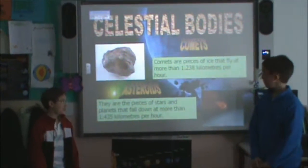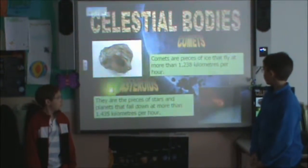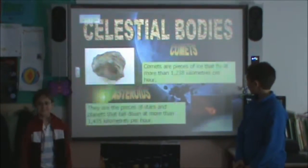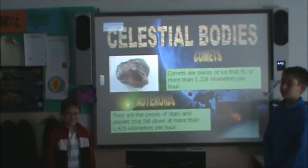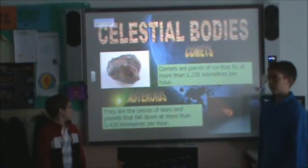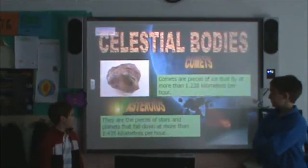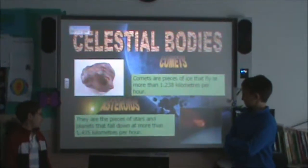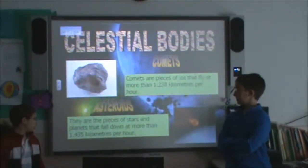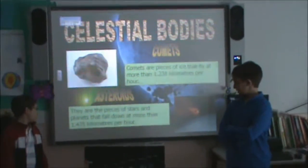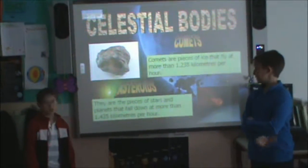Celestial bodies. Comets are pieces of ice that fly at more than 1,238 kilometers per hour. Asteroids are pieces of stars and planets that fall at more than 1,435 kilometers per hour.